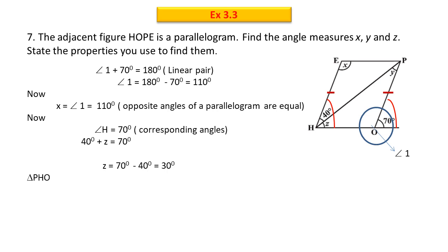Now, we will focus on the triangle PHO. We know the angle sum property ki triangle ki teeno angle ka sum 180 degree hota hai. So, y plus z plus angle 1, 180 degree ho ga. We will put the value of angle 1 and angle z. And on solving, we will get the value for y to be 40 degrees.